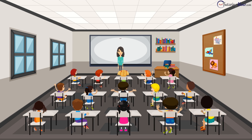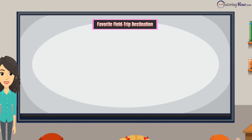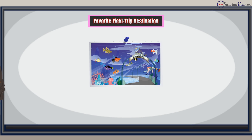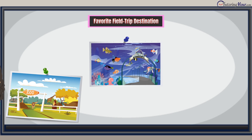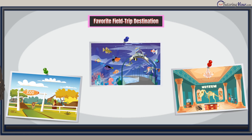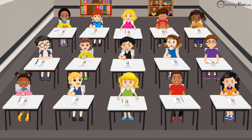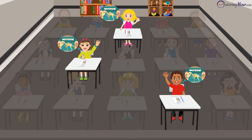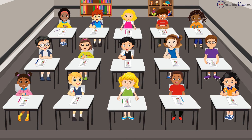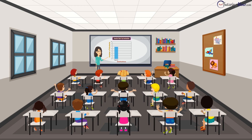Ms. Jenkins is planning to take her class on a field trip. She is looking for suggestions. Some kids opt for the aquarium, while some want to visit the zoo animals. There were some others who thought the museum was the best idea. So to decide on the field trip destination, Ms. Jenkins asked the 15 kids to choose between the aquarium, zoo, and museum. Ms. Jenkins then converted the information into a bar graph.